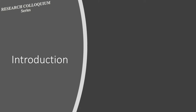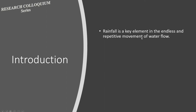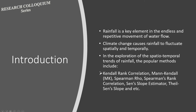So what is this topic about? Long records of rainfall data with good quality is a significant component that triggers the entire change of responses in the hydrological cycle, providing useful information to hydrologists. Rainfall is a key element in the hydrological cycle — the endless and repetitive movement of water flow. However, climate change has caused rainfall to fluctuate both spatially and temporally.